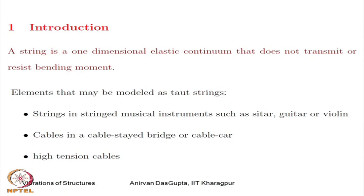So, where do we find strings? Elements that may be modeled as taut strings are found in stringed musical instruments such as setar, guitar, violin, and even the piano — instruments in which the sound is basically produced by the string. Then in cables, in a cable-stayed bridge or a cable car, these structures have cables which are under tremendous amount of tension and hence they can be analyzed as strings. High-tension cables, which are again under very high tension, may be treated as taut strings.